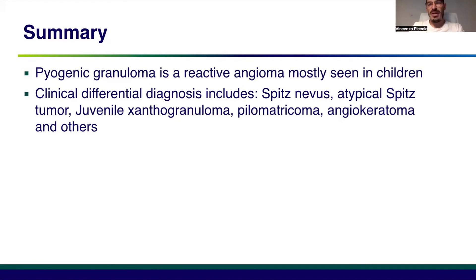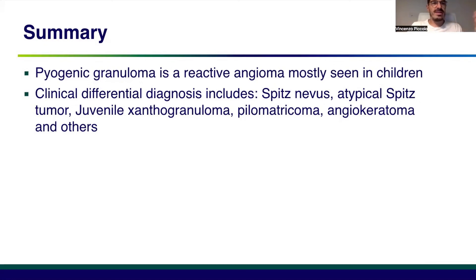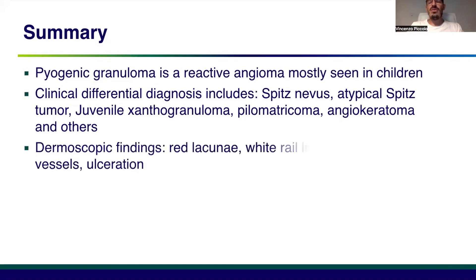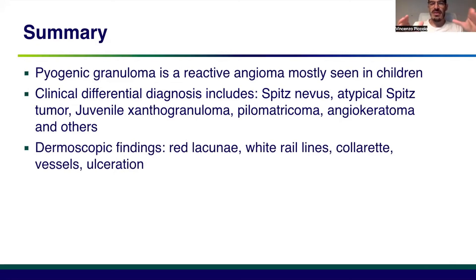Other differential diagnoses include juvenile xanthogranuloma, pilomatricoma, angiokeratoma, and other common benign tumors of children, or malignant tumors in adults such as melanoma. The most common dermoscopic findings include red lacunae — single or multiple — wide red lines delimiting the lacunae, a wide peripheral collarette, some vessels, and ulceration.